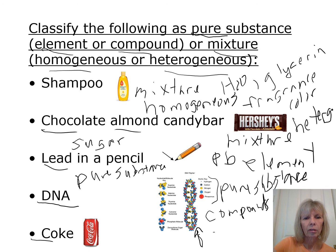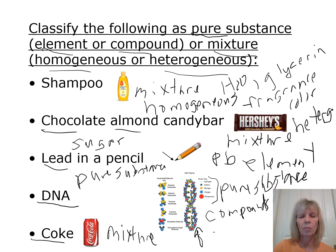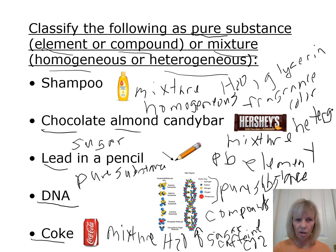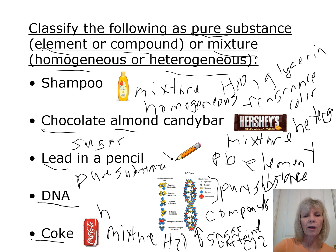Coca-Cola is a mixture because it's comprised of different pure substances: water, sugar, caffeine, and carbon dioxide (which makes it bubbly). These pure substances are mixed together in variable proportions. Since Coca-Cola looks the same throughout, it's classified as a homogeneous mixture.